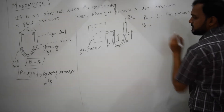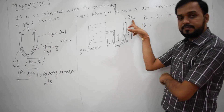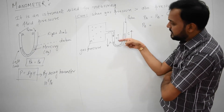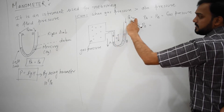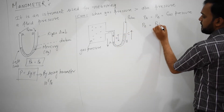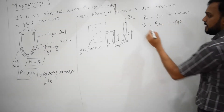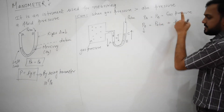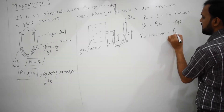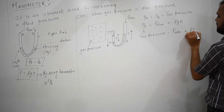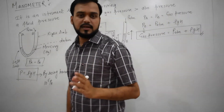How much is the pressure at point B? At point B there are two pressures: one is atmospheric pressure plus one pressure due to the depth. At point B, the pressure due to the depth and the atmospheric pressure combine. Since point B is actually equal to gas pressure, the gas pressure is calculated as atmospheric pressure plus rho GH. So with this formula, in this case we can calculate the gas pressure.